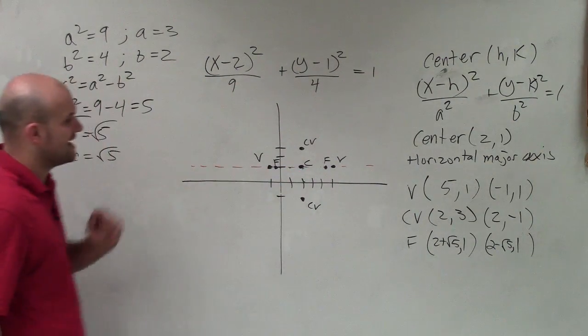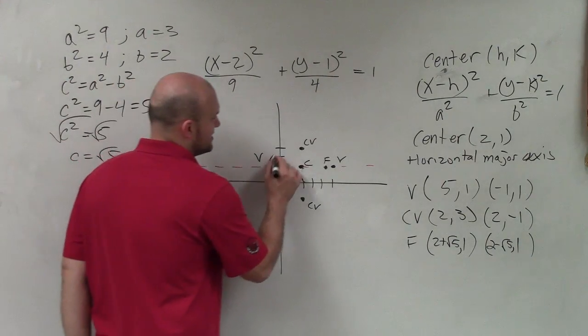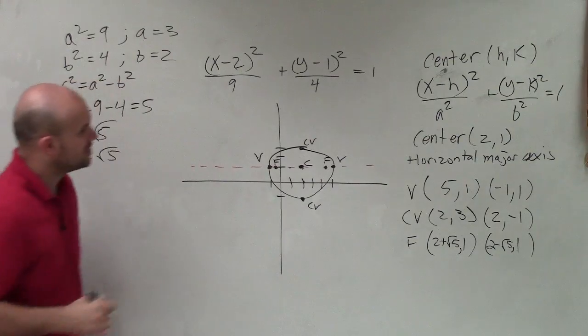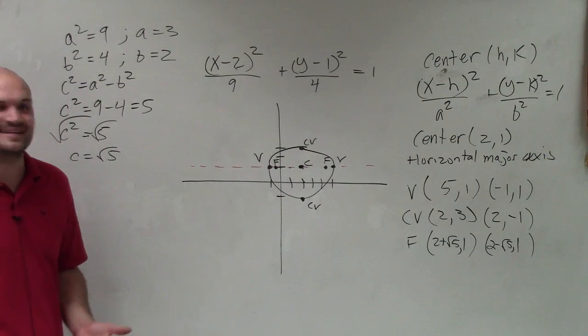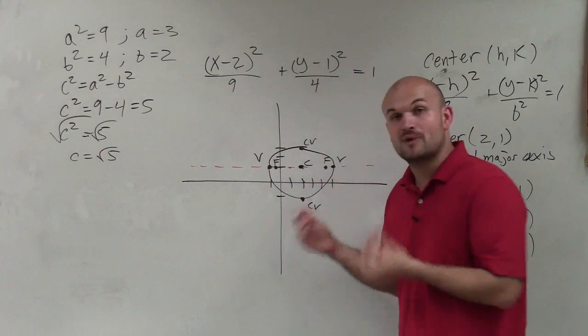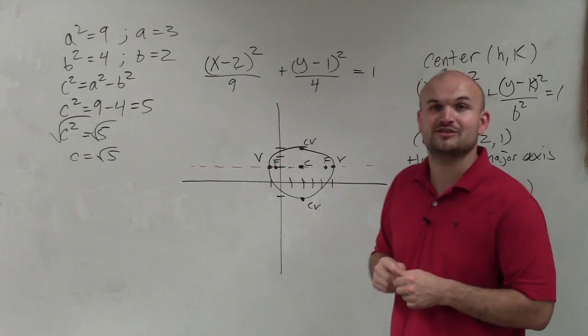I have my vertices, my co-vertices, and my center. Now I just connect the vertices with the co-vertices and I graph a very ugly ellipse. That's how you graph an ellipse as well as plot the information. Thanks.